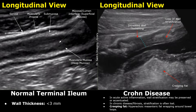Instead of distinct layers, we see a thick, hypoechoic, and heterogeneous layer. Some areas may appear normal, but in these areas the bowel wall has an abnormal appearance. Another feature is the presence of hyperechoic prominent fat surrounding the bowel loop, often called creeping fat. You can see this fat layer appearing very hyperechoic, almost like a solid mass next to the bowel. Normally, we will not see this prominent fat layer next to the bowel.